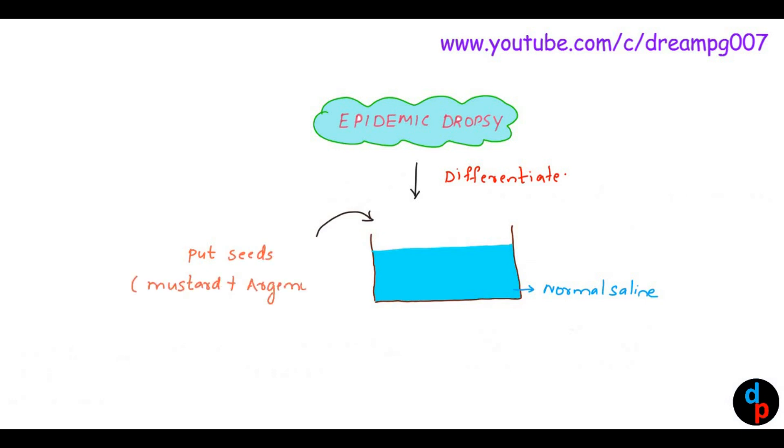The mustard seeds will sink to the bottom whereas the Argemone seeds will float. That's how we differentiate between the mustard seeds and Argemone seeds.